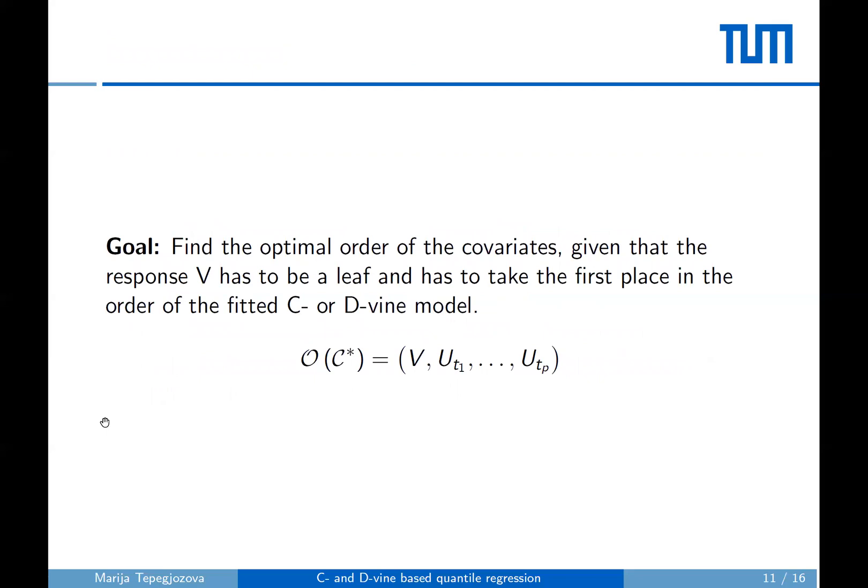With this restriction imposed, the problem simplifies to finding the optimal order of the predictors. That is, given that the response has to be a leaf and therefore takes the first place in the order by default, we need to find the optimal permutation Ui1 to Uip of the predictor set U1 to Up.